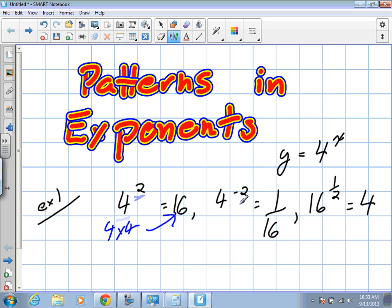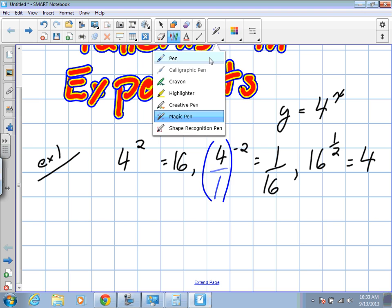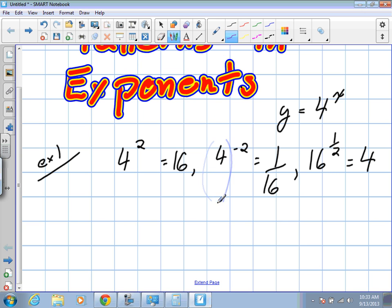We talked about yesterday negative exponents and to make a negative exponent positive we invert the base and then we square it. So in case you're unsure exactly how we got that, that would then become 1 over 4 to the power of 2.